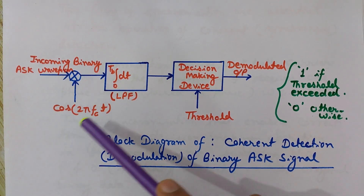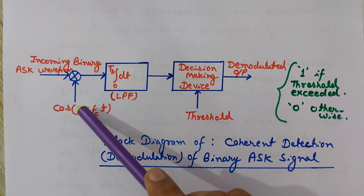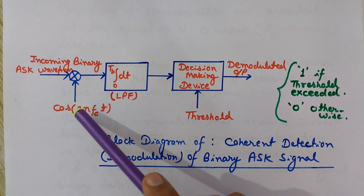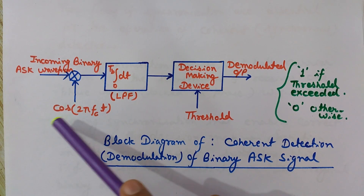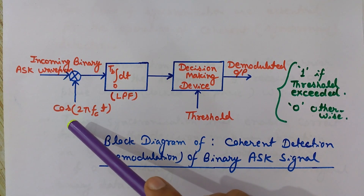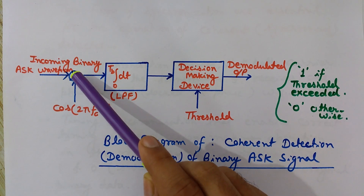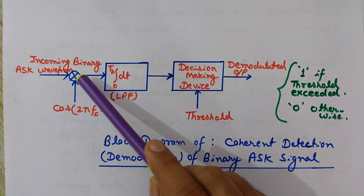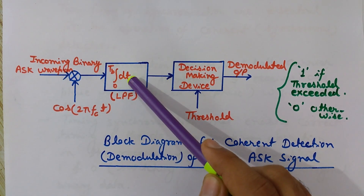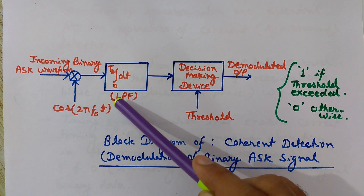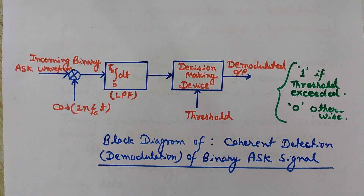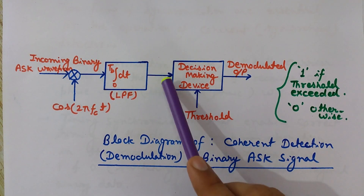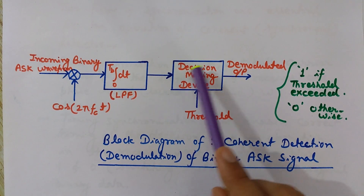Since it is coherent demodulation, this locally generated carrier wave at the receiving end must be in synchronism with the carrier wave used at the transmitting end, which is modulated by the modulating signal. These two signals are applied at the product modulator's two inputs, and the output is fed to the integrator. The integrator acts as a low pass filter; it operates on the output of the multiplier for successive bit intervals and performs a low pass filtering action.